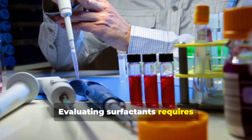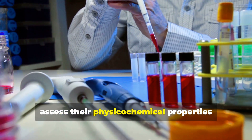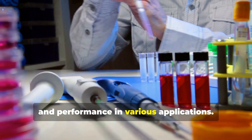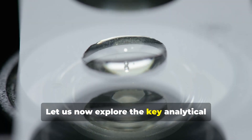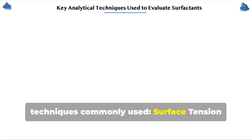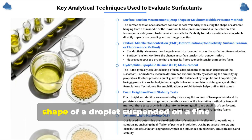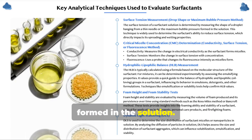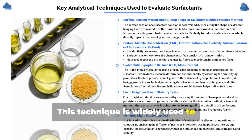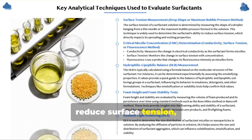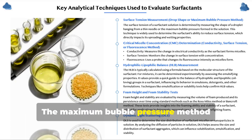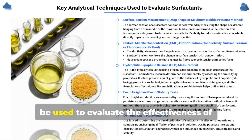Evaluating surfactants requires specialized analytical techniques to assess their physical and chemical properties. Surface tension measurement determines the surface tension of a surfactant solution by measuring the shape of a droplet suspended on a fine needle or the maximum bubble pressure formed in the solution. This technique is widely used to determine the ability of a surfactant to reduce surface tension, directly affecting diffusion and wetting properties. The maximum bubble pressure method provides more dynamic information to evaluate surfactant effectiveness under real-time conditions.